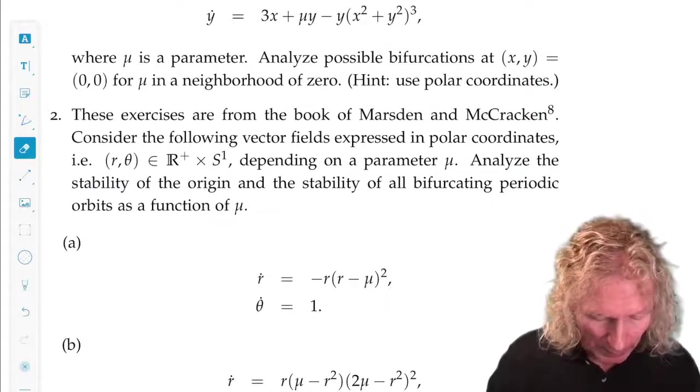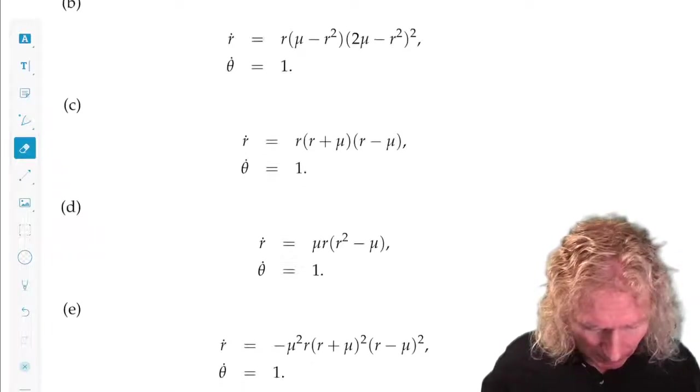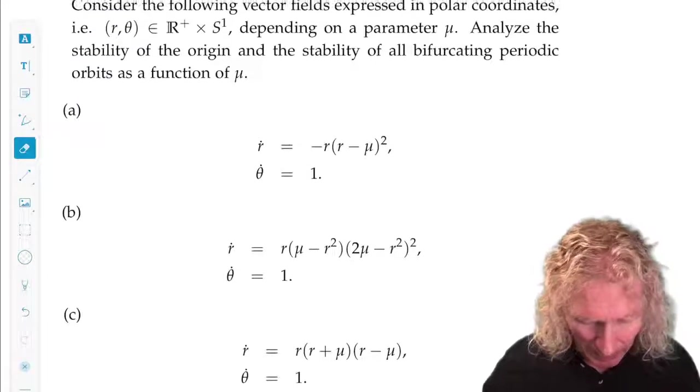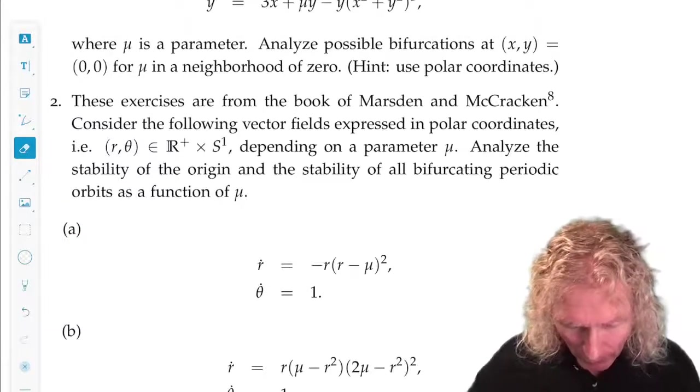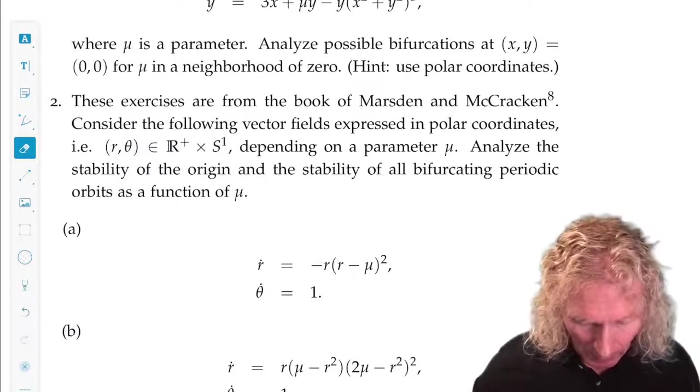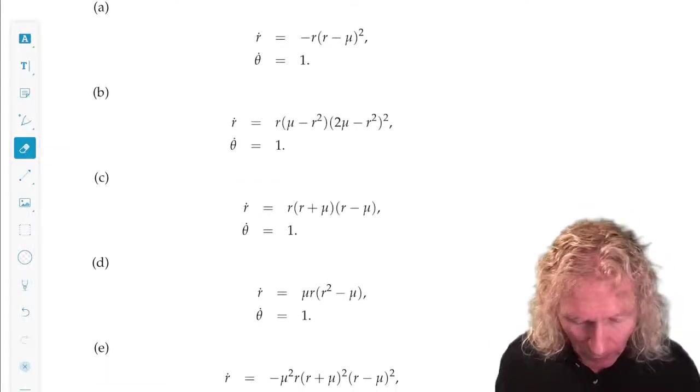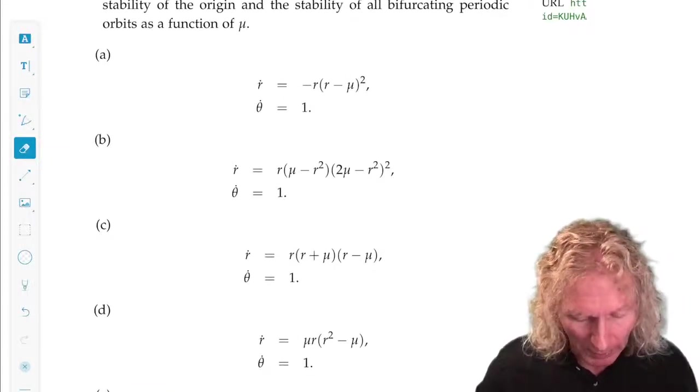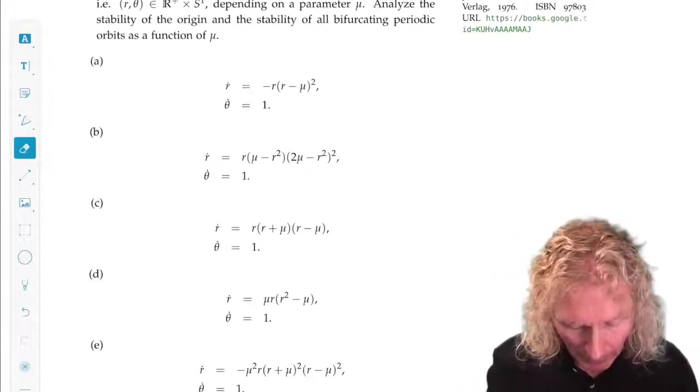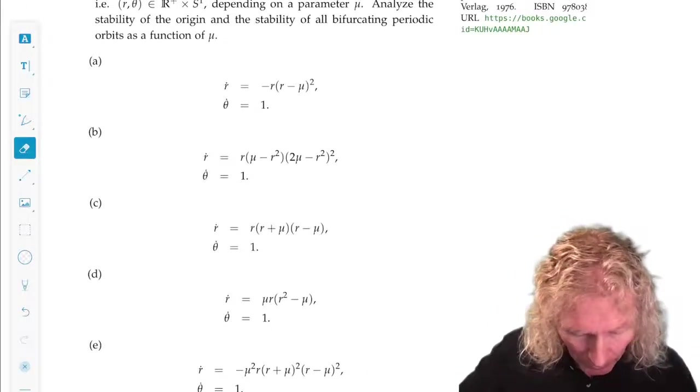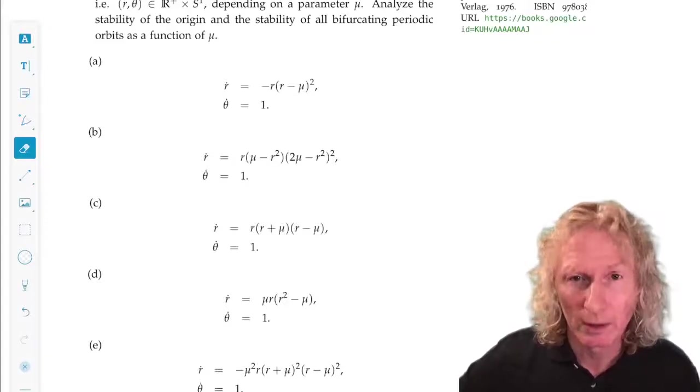Okay, these are five exercises A, B, C, D that I took from the book of Marsden and McCracken on the Hopf Bifurcation. And I've given the reference. These exercises are given in polar coordinates. And I want you to do the bifurcation analysis for each of these.